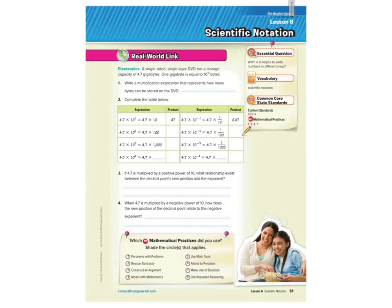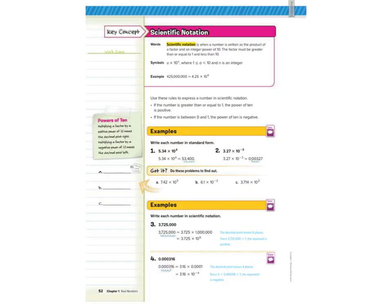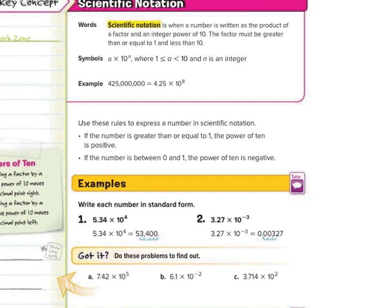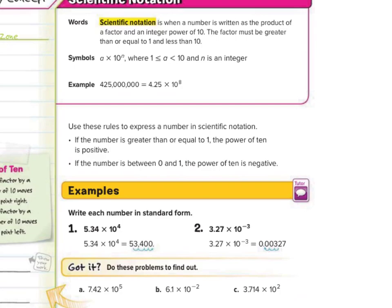Hi, Mr. Richards here. Today's lesson is on scientific notation. Scientific notation is when a number is written as the product of a factor and an integer power of 10. Now this little detail is key: the factor must be greater than or equal to 1 and less than 10.